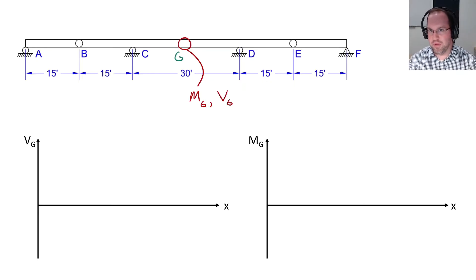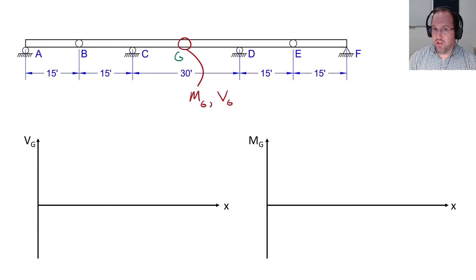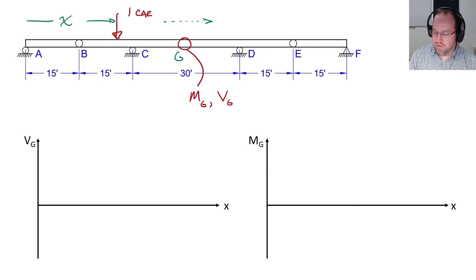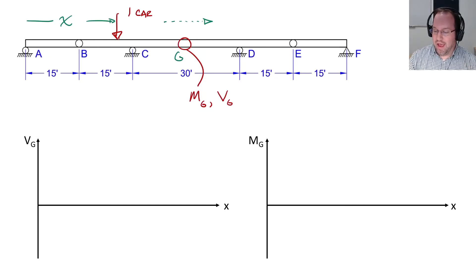Intuitively I know that's going to be an important point — mid-span of my center span. I know I'm going to have fairly large moments there, so I'm interested in what are the demands. However, I don't necessarily know the load. And if we're doing bridge design, we know the load is in fact going to move. So let's say my load is positioned at some location here — let's call that location X. Let's say it's one car, and it's driving across my bridge. So at some point, as that car is driving across the bridge, I'm going to have the maximum possible shear and the maximum possible moment at my location of interest. So where is that?